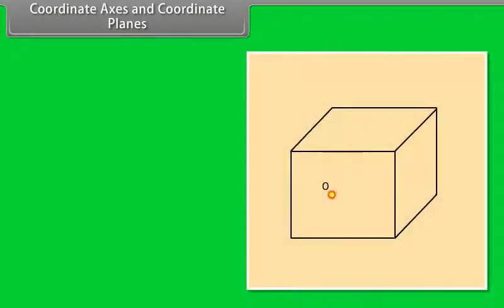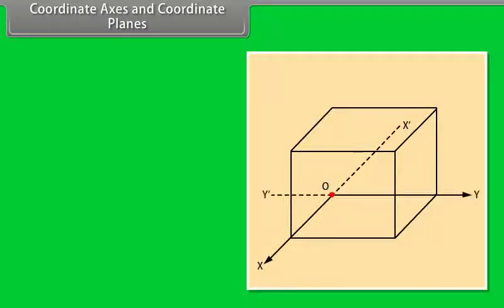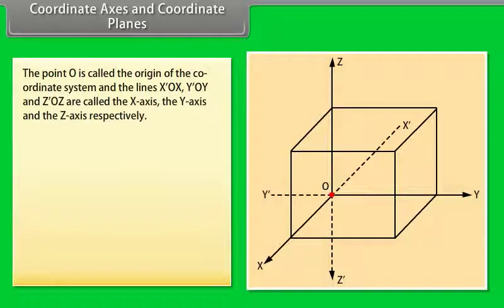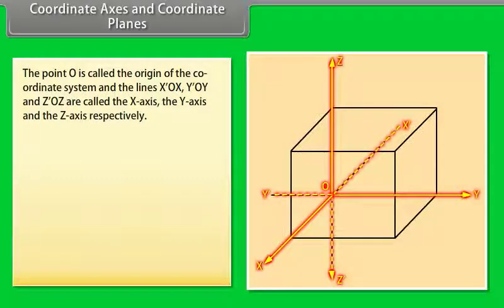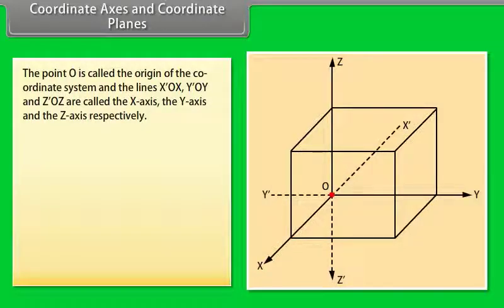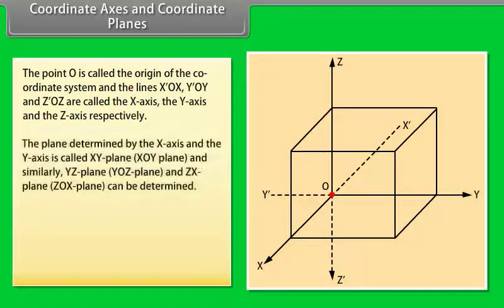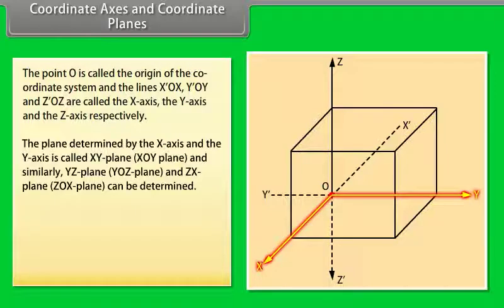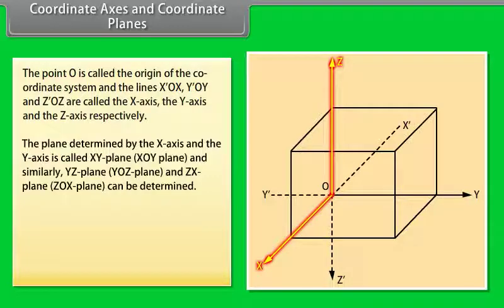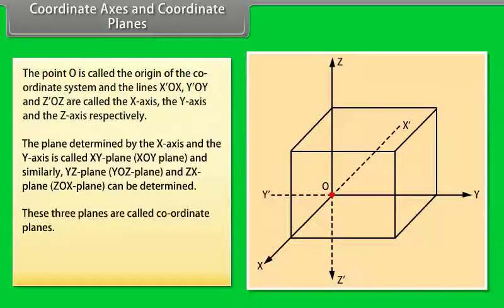Let us start with an arbitrary point O in space and draw three mutually perpendicular lines. The point O is called the origin of the coordinate system and the lines X'OX, Y'OY and Z'OZ are called the x-axis, the y-axis and the z-axis respectively. The positive direction of the axis is indicated by arrows with thick lines. The plane determined by the x-axis and the y-axis is called the XY-plane, i.e. XOY-plane, and similarly the YZ-plane, i.e. YOZ-plane, and ZX-plane, i.e. ZOX-plane, can be determined.